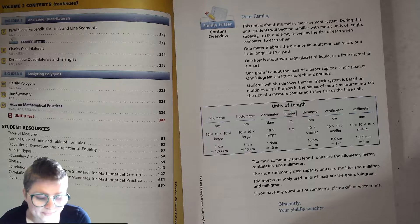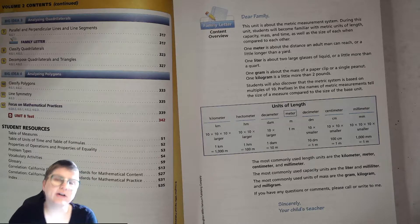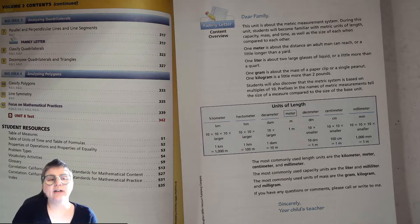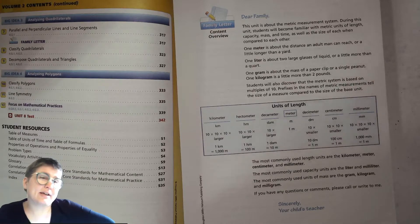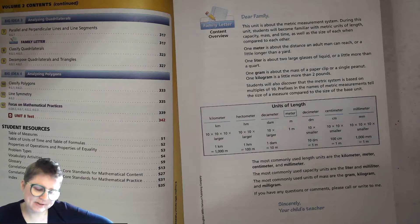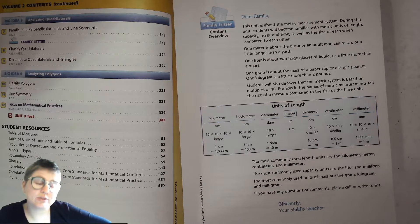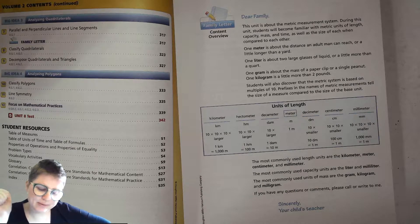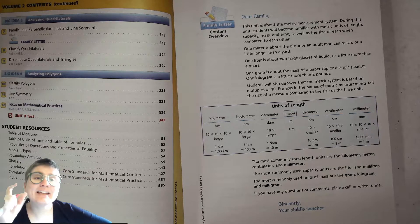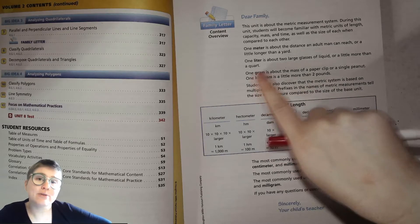One meter is about the distance an adult man can reach with one arm, or a little bit longer than a yard — closer to about 39 inches. A liter is about two large glasses of liquid, or a little bit more than a quart, which is a quarter of a gallon. A gram is about the mass of a paperclip or a single peanut, and a kilogram is a little more than two pounds — also a thousand grams.